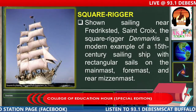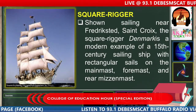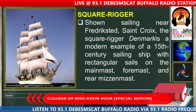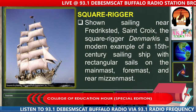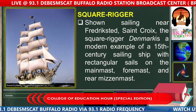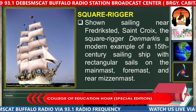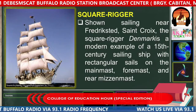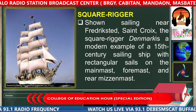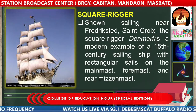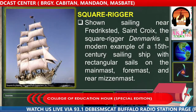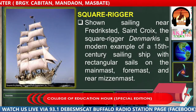Next is the square rigger, shown sailing near Frederiksted, St. Croix, Denmark — a modern example of a 15th century sailing ship with rectangular sails and the main mast, foremast, and rear mizzenmast. You can notice that in terms of development for transportation and for agricultural and domestication of animals, there has been continuous upgrading from ancient times to modern times.